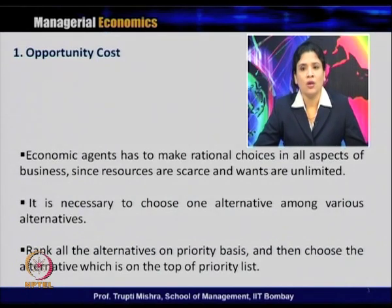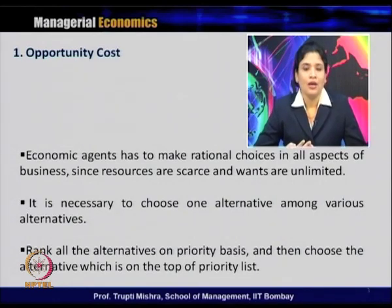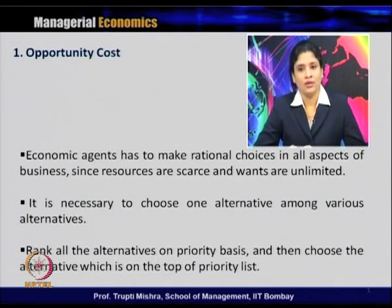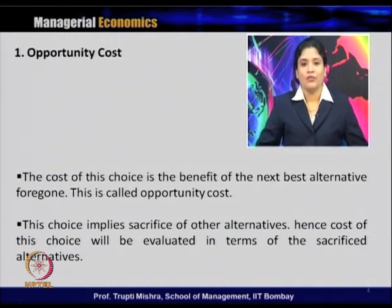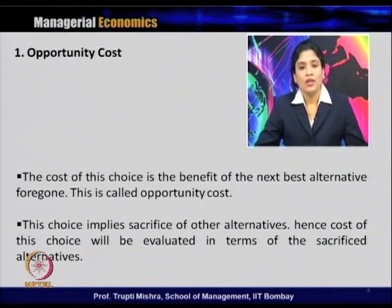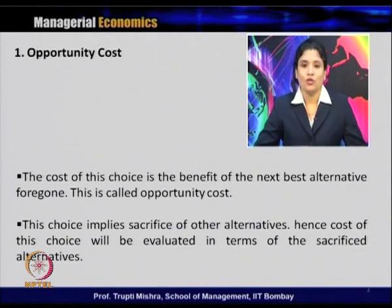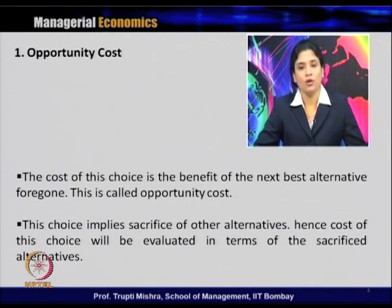Resources are scarce and wants are unlimited. There are different alternatives to use resources, and they can choose only one alternative. The economic agent ranks all alternatives on a priority basis, then chooses the alternative at the top of the priority list. The cost of this choice is the benefit of the next best alternative forgone — and this is opportunity cost. The cost associated with choosing an alternative is the benefit of the next best alternative forgone, which is what we call opportunity cost.